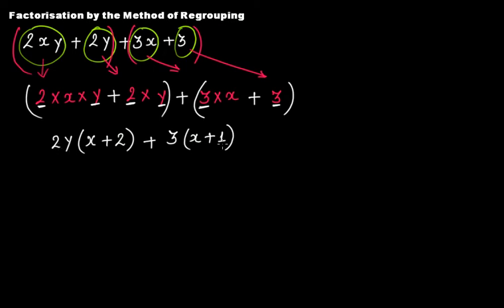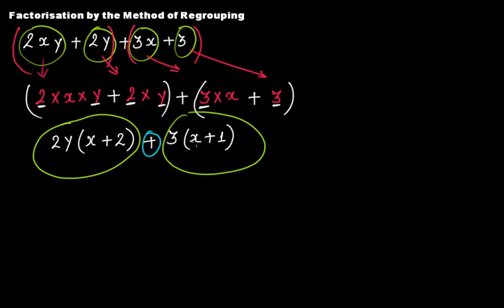Now this algebraic expression is actually of two terms. One term is 2y multiplied by x plus 1, because you have a plus sign here, and then you have 3 multiplied by x plus 1. We have these two terms now. In these two terms, if you pay attention, x plus 1 here and x plus 1 here — the factor x plus 1 is common in these two terms.